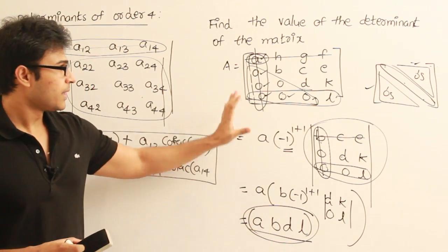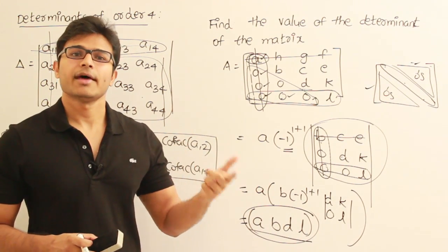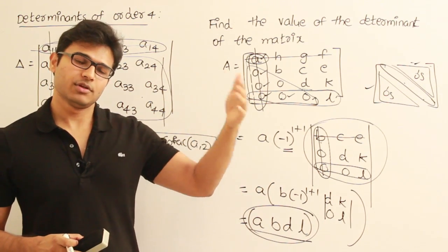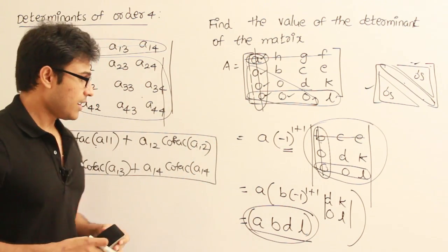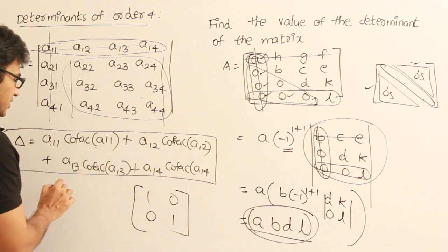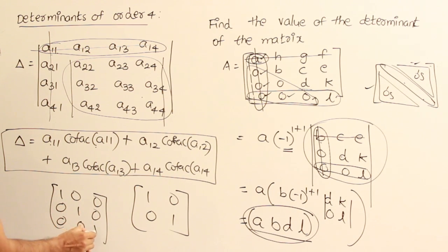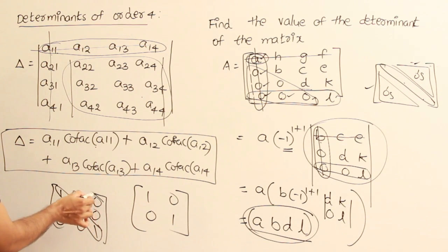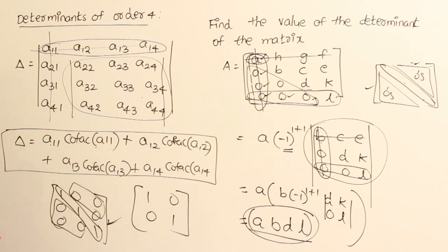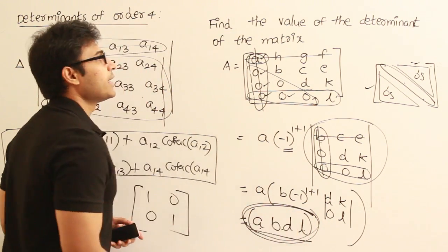Remember this key point: for an upper triangular matrix, lower triangular matrix, diagonal matrix, or identity matrix — where all principal diagonal elements are 1 and all other elements are 0 — the value of the determinant is always equal to the product of the principal diagonal elements.